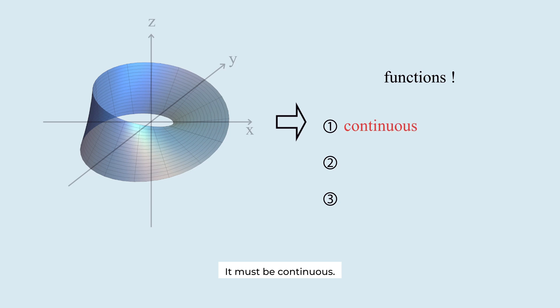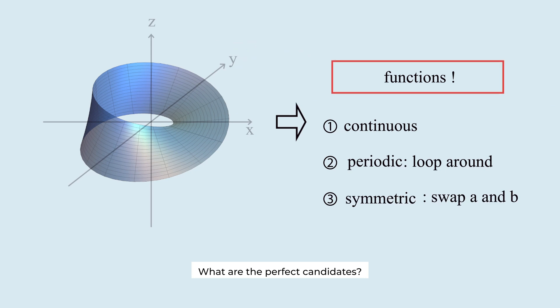It must be continuous. And it must be periodic since the Möbius strip loops around. And it must be symmetric so that the positions of A and B swap correctly. What are the perfect candidates? Sine and cosine functions.